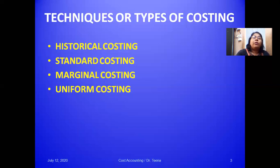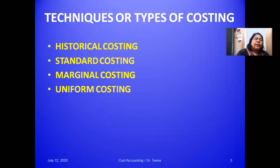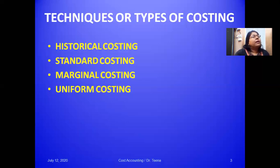The third technique is marginal costing, which is very important for management decision-making. Under marginal costing, costs are classified into fixed costs and variable costs. Variable costs are treated as product costs and fixed costs are treated as period costs. This technique is very helpful in managerial decision-making. Please check previous videos for the meaning of fixed costs and variable costs.